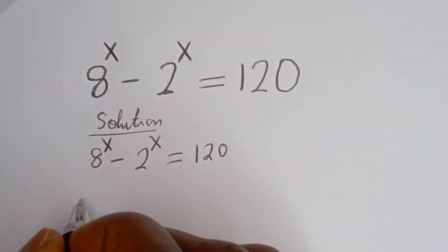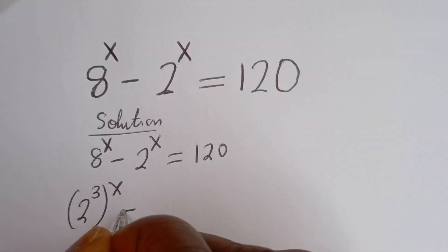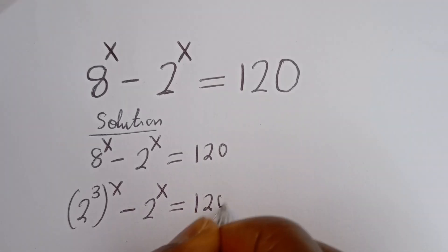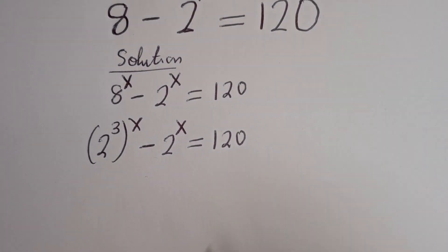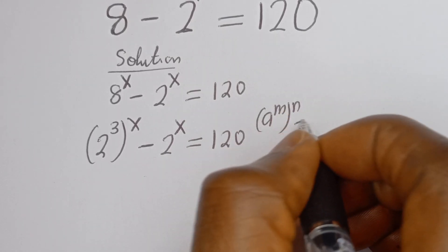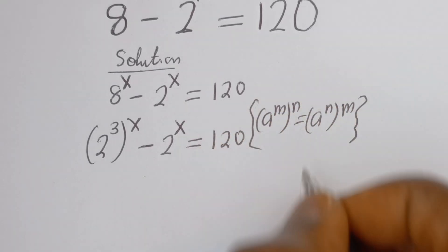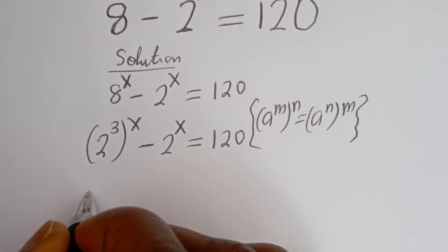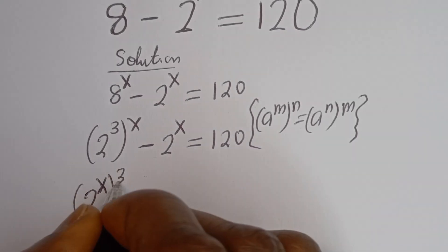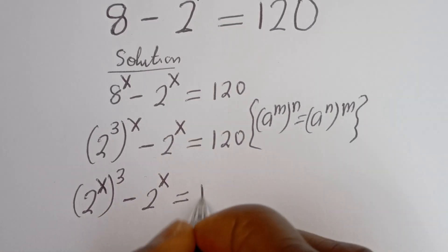Now, 8 to the power of x can be written as 2 to the power of 3 to the power of x, minus 2 to the power of x, is equal to 120. Take note that if you have 8 to the power of m to the power of n, this is equal to 8 to the power of n to the power of m. Then this can be written as 2 to the power of x to the power of 3, minus 2 to the power of x, is equal to 120.